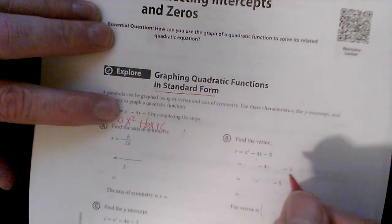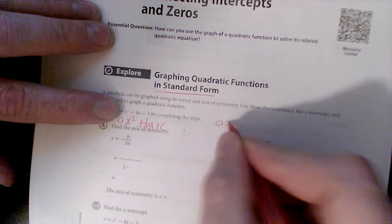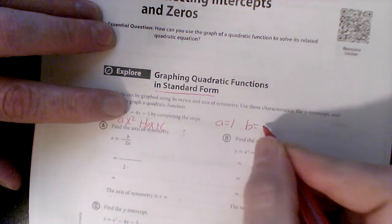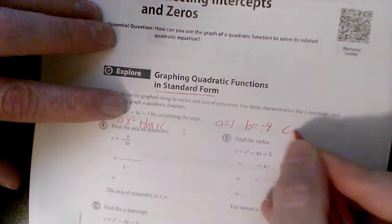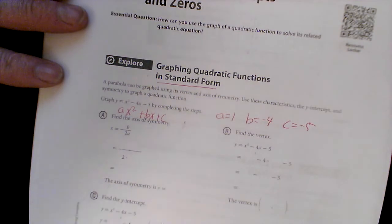So in this one, if you see that right there, your a is that leading coefficient of 1, your b is negative 4, and your c is negative 5. So first thing you do is you find the line of symmetry.